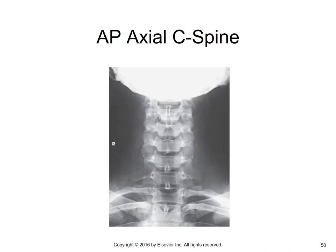Here is a good AP axial image. Note the large white circle at the top of the radiograph — that is the skull area obscuring C1 and C2. That's why you need to do the open mouth view separately.